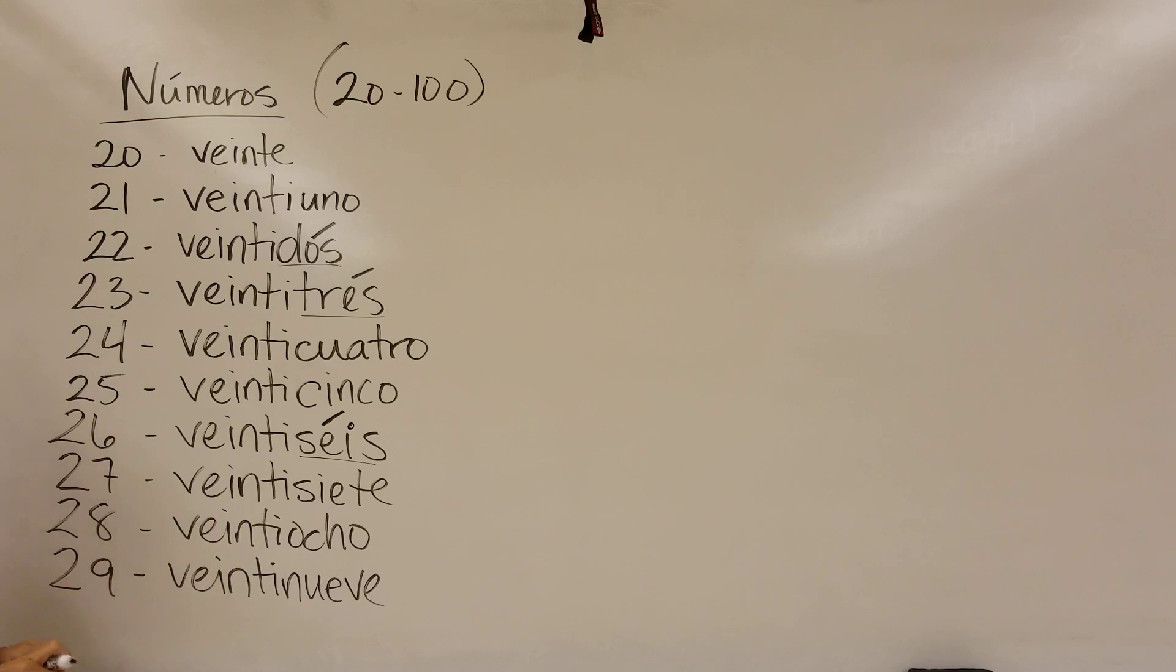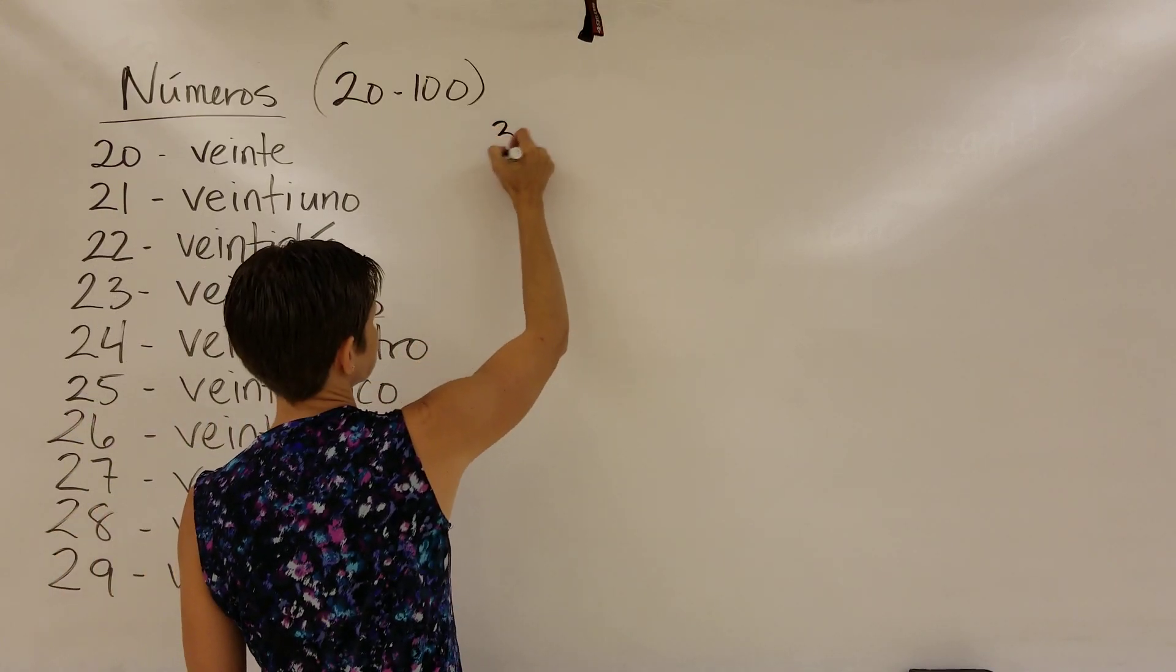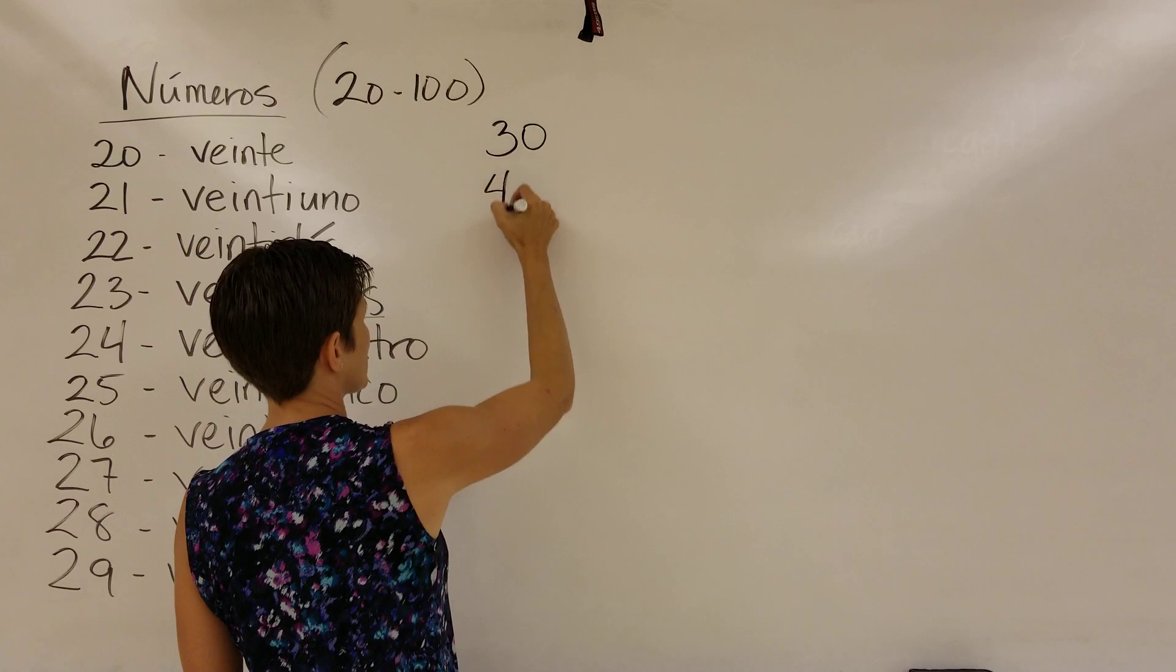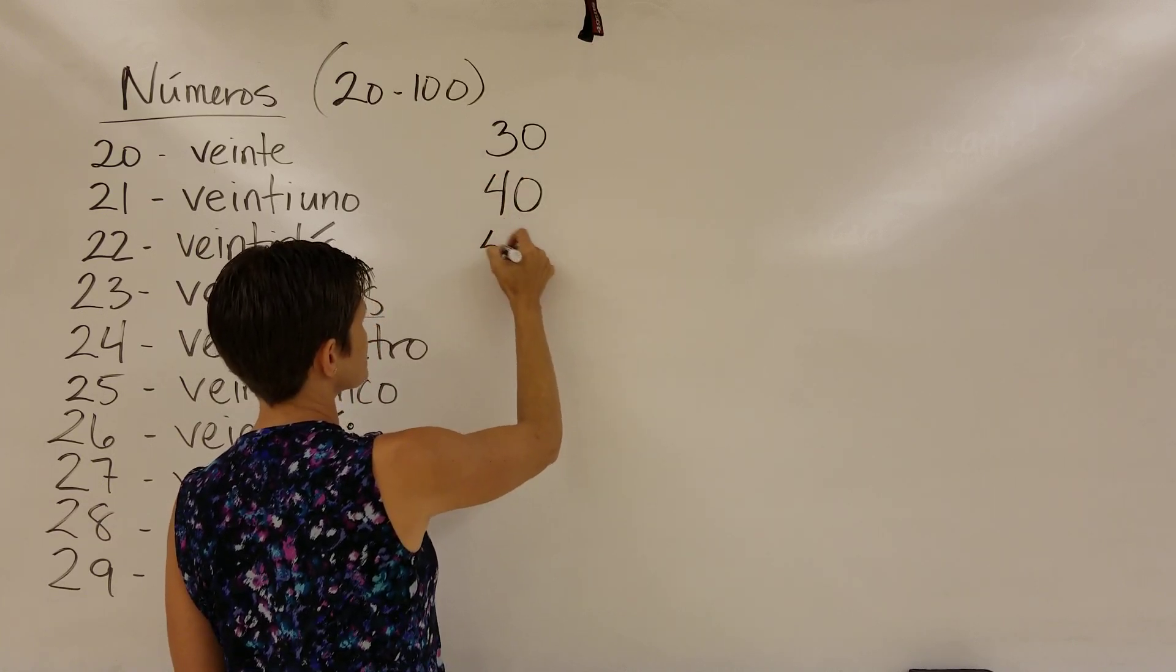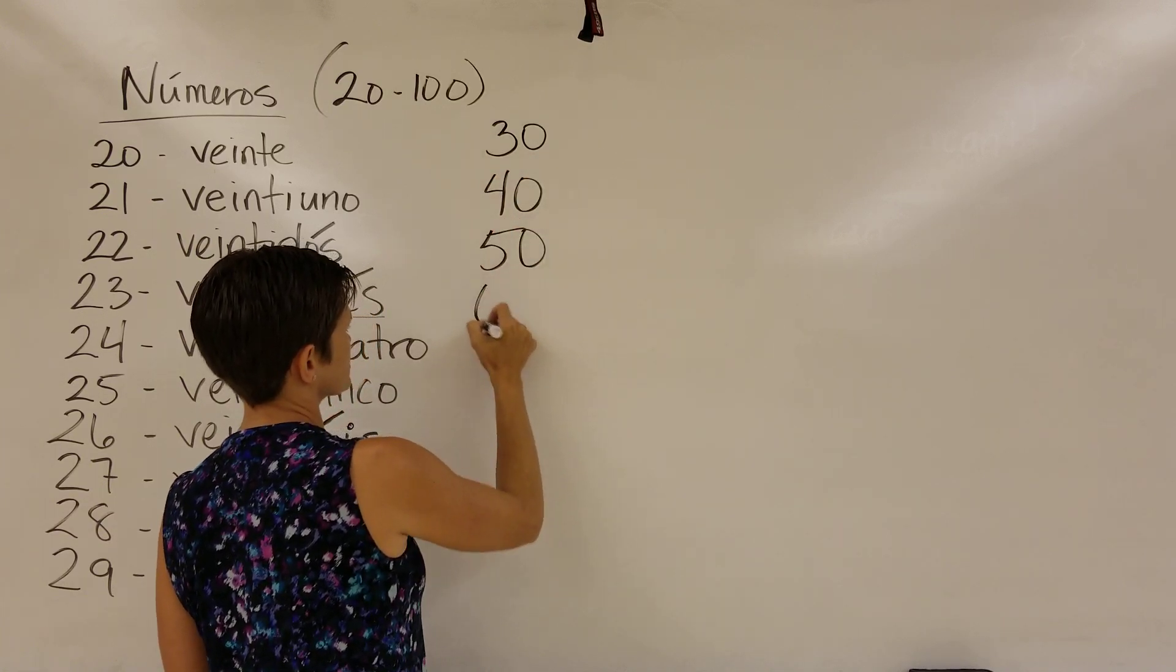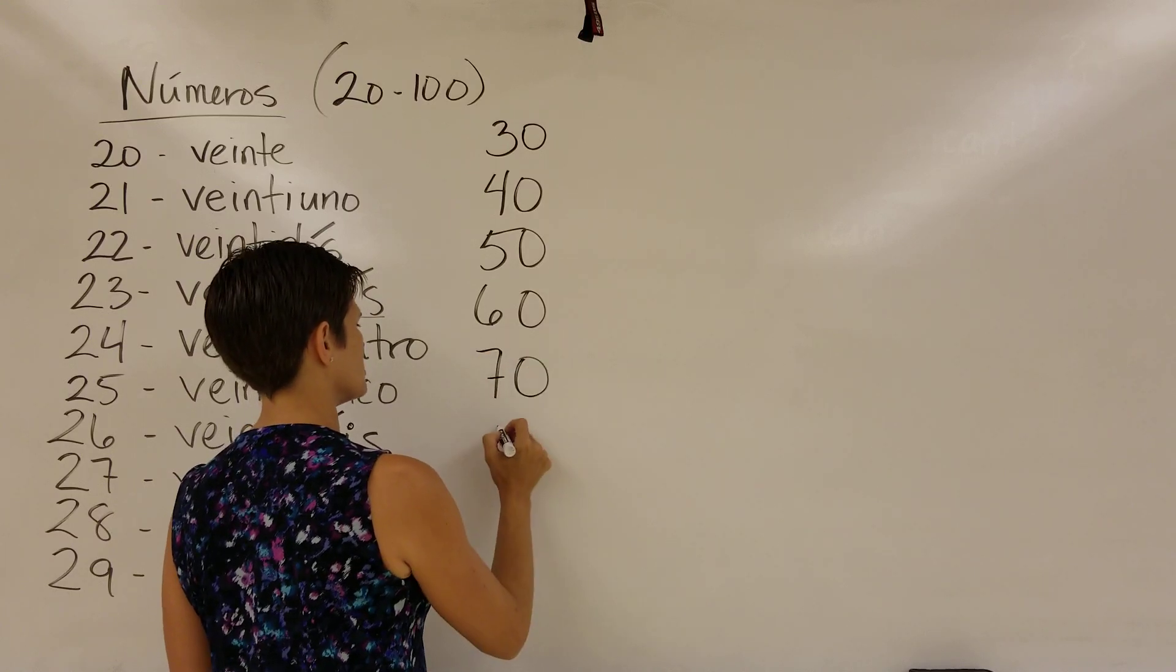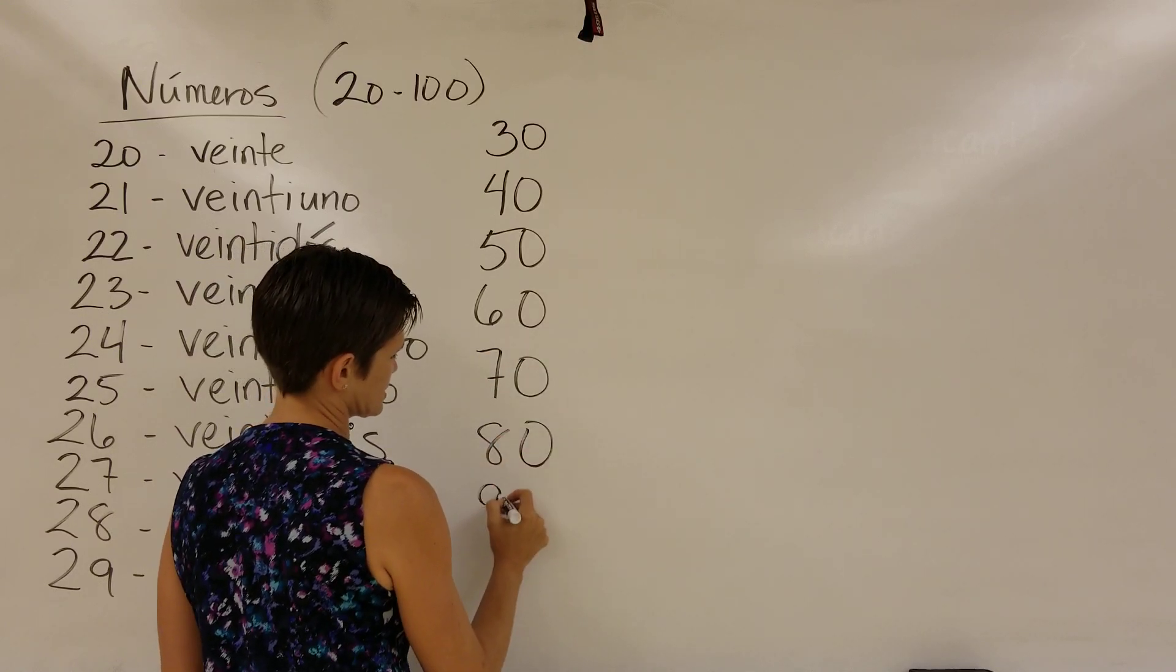It gets easier after that, though. Once we get to the 30s, now we don't need to learn every single number. Now we can just learn the tens position and add numbers to it at the end.